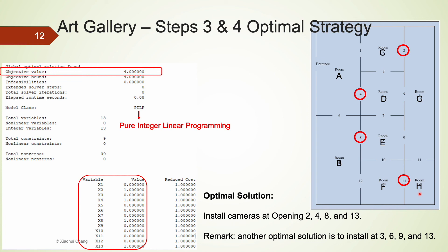An alternative optimal solution is to install cameras at openings 3, 6, 9 and 13. I hope you found this example interesting and useful. This also concludes this video.